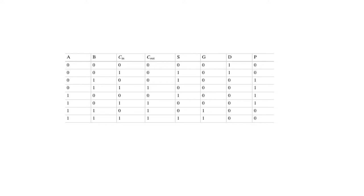Up until this column, this is just the truth table for the full adder — a truth table of two functions, carry out and sum. To the right of this line we have three new bits: G for generate, D for delete, and P for propagate. G, D, and P are mutually exclusive bits, meaning in any row only one of these three can be a one at a time.